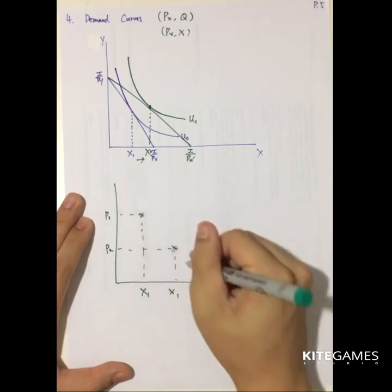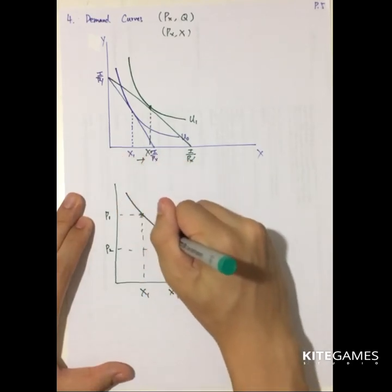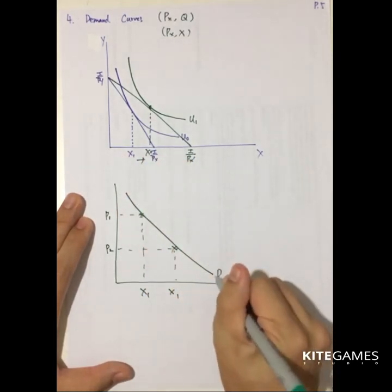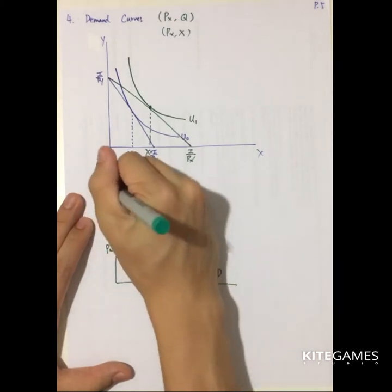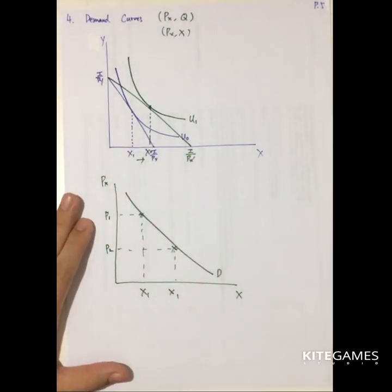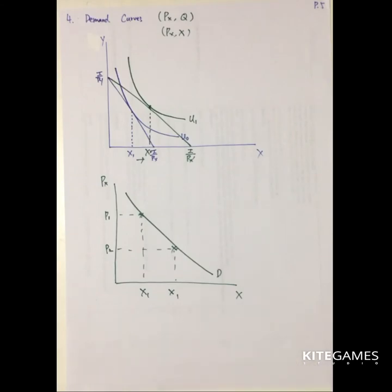You can show the negative relation between price and quantity. This is how we derive a downward sloping demand curve. Note that this is not a given curve — it is derived.